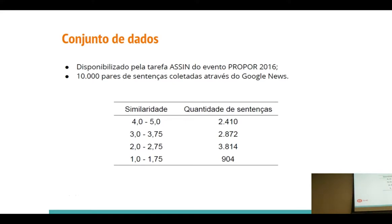Para isso, a gente juntou as abordagens simbólicas com a conexionista — ou seja, tivemos modelos de aprendizagem de máquina e usamos recursos léxicos-semânticos como bases. Essa junção nos diz que o algoritmo de aprendizagem de máquina precisa de um conjunto de treinamento. A gente usou uma base bem conhecida para essa área de similaridade, que é o conjunto do ASSIN, do evento Propor — um evento aplicado para NLP em português que ocorreu em Portugal em 2016 e acontece a cada dois anos.